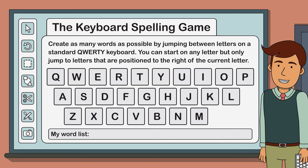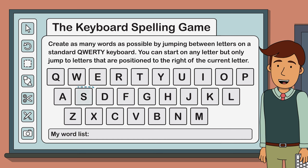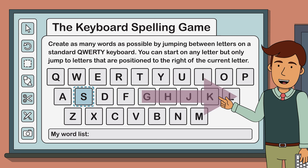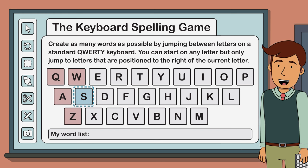Let me demonstrate with an example. To start, choose any letter on the keyboard — let's say the letter S. Now remember, I can only jump to a letter that is positioned to the right of the letter S, which means that the letters Q, W, A, and Z are now out of play. Let's highlight them red.